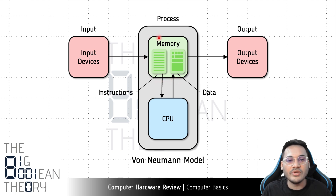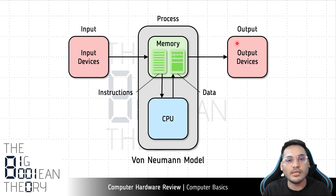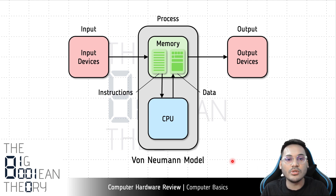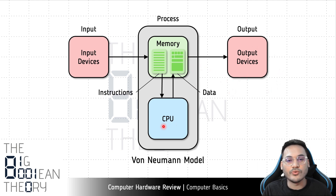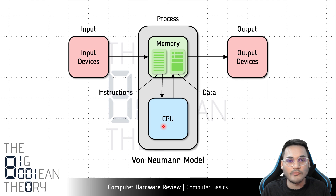Once the output data is ready it is sent to the output devices, from which we as users can consume whatever output the computer has produced. Examples of output devices include the monitor or display, a printer, and speakers for audio output. This basic model — with input, processing, output, and the components of input devices, output devices, memory, and CPU — is called the Von Neumann model. These are the major components in any computer, regardless of how complex or simple it is.